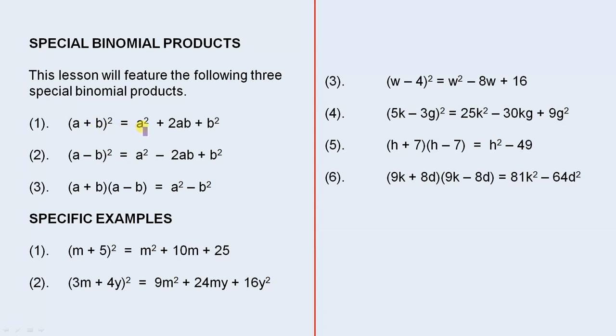You square the first term which is a². You multiply them together and then double the answer which gives you 2ab, and then you square the second term which gives you b². So that gives you a very quick way of finding the answer.